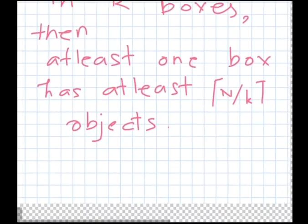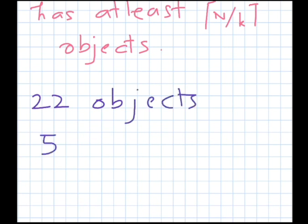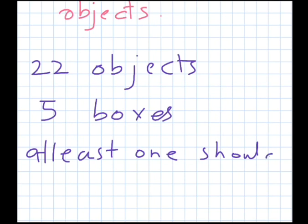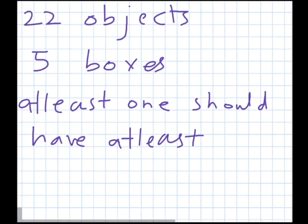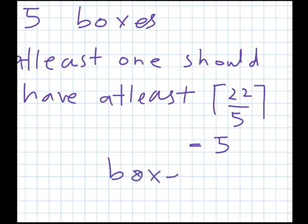This is actually a generalized pigeonhole principle. For example, if we have 22 objects and five boxes, the pigeonhole principle says that at least one box should have at least the ceiling of 22 over 5, which equals 5 objects.